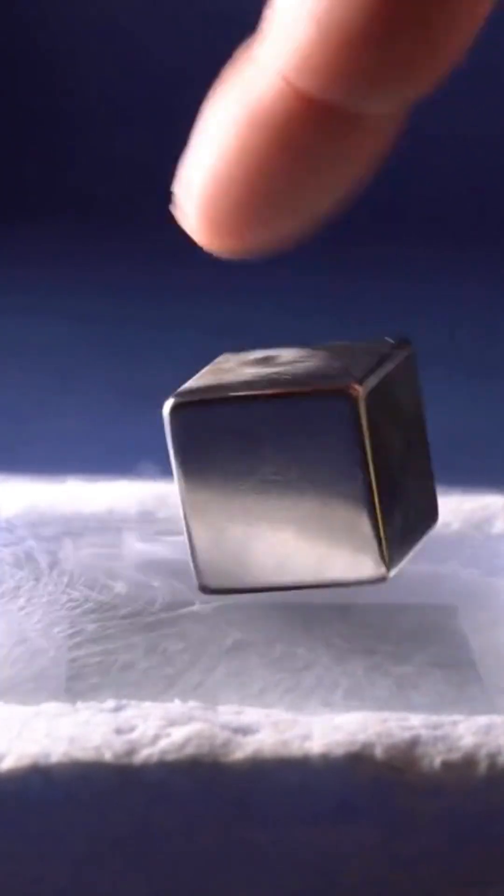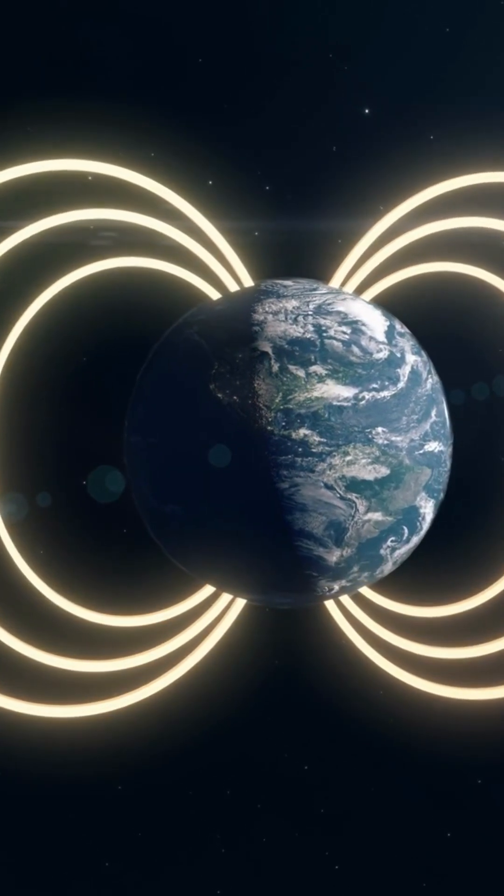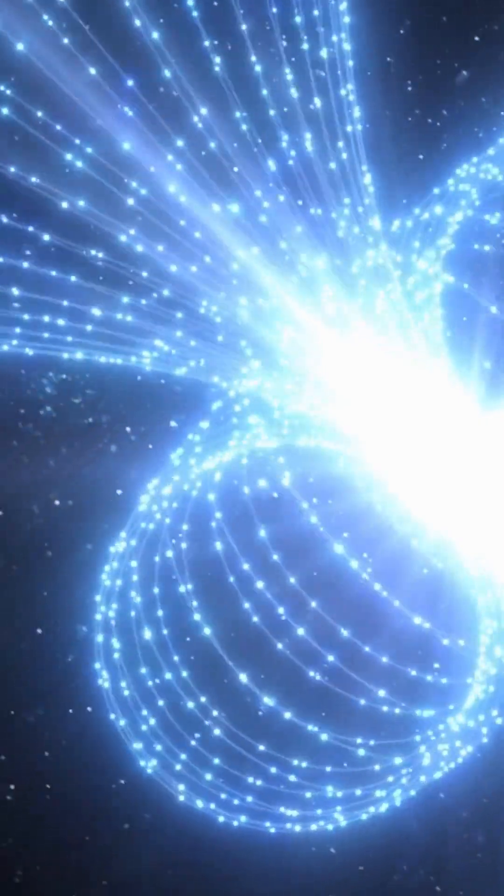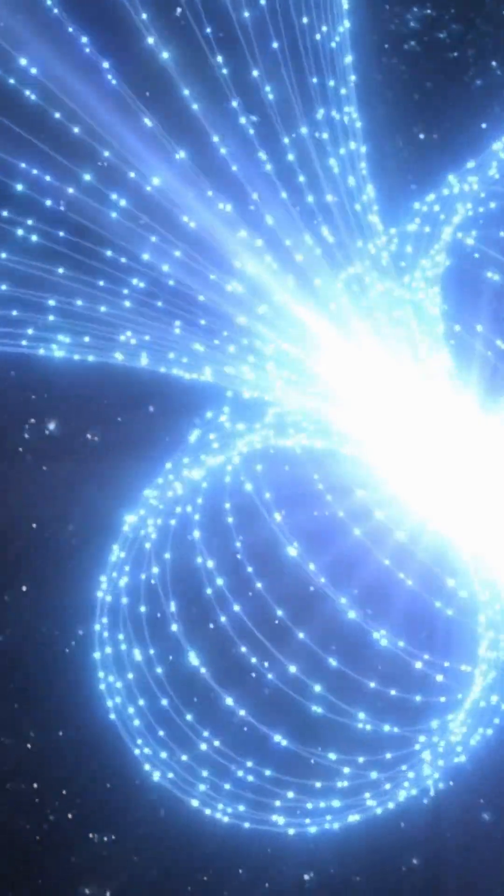An interesting thing about superconductors is that when they are placed in a magnetic field, they expel it. Unlike regular metallic conductors, they don't allow magnetic field lines to pass through them.